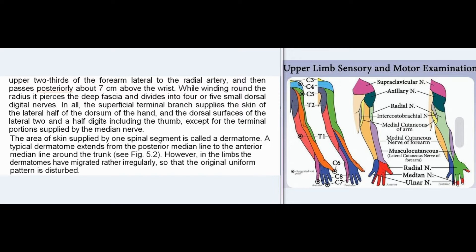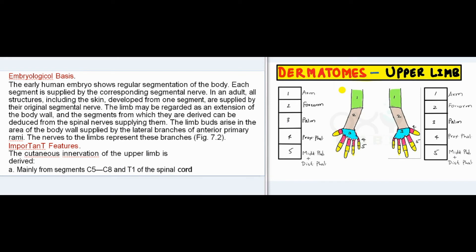The area of skin supplied by one spinal segment is called a dermatome. A typical dermatome extends from the posterior median line to the anterior median line around the trunk; however, in the limbs, dermatomes have migrated rather irregularly. The early human embryo shows regular segmentation, with each segment supplied by its corresponding segmental nerve. The limb buds arise in the area of the body wall supplied by the lateral branches of anterior primary rami, and the nerves to the limbs represent these branches.